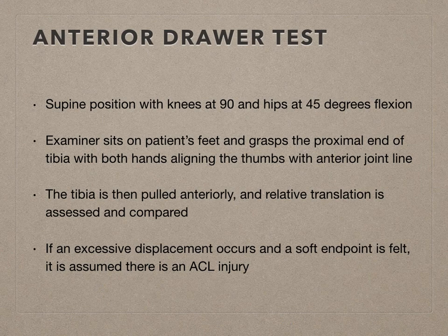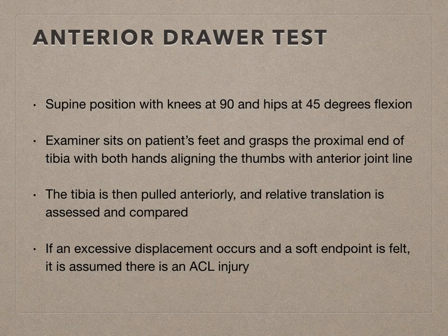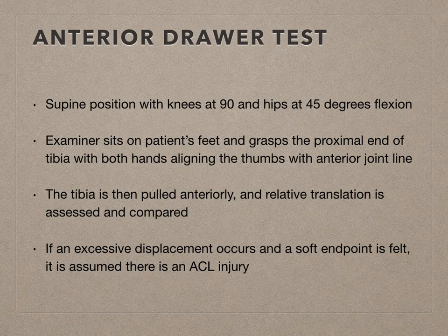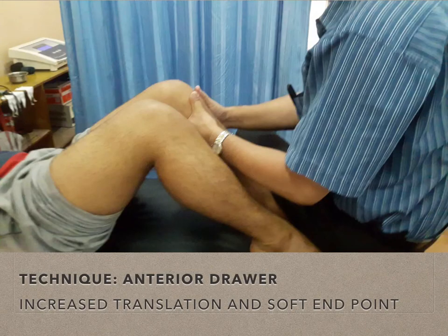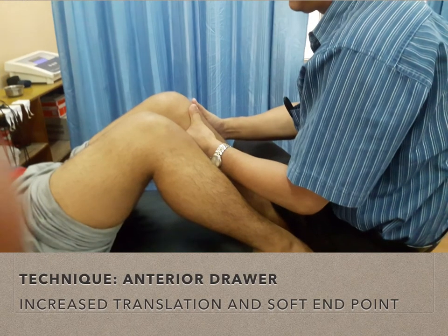Another test we will discuss is the anterior drawer test. It is performed in the supine position with the knees at 90 degrees and the hips at 45 degrees flexion. The examiner sits on the patient's feet, stabilizing them, and grasps the proximal end of the tibia with both hands, aligning the thumbs with the anterior joint line. The tibia is then pulled anteriorly and relative translation is assessed and compared. If an excessive displacement occurs and a soft endpoint is felt, it is assumed there is an ACL injury. This is the technique of the anterior drawer test.